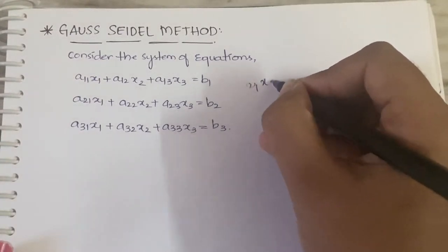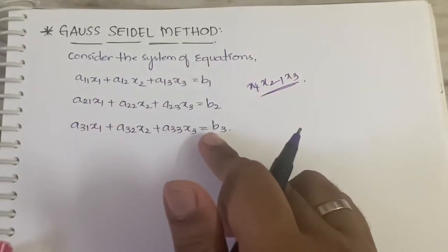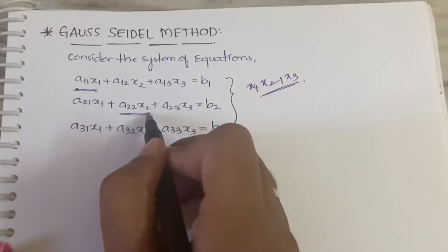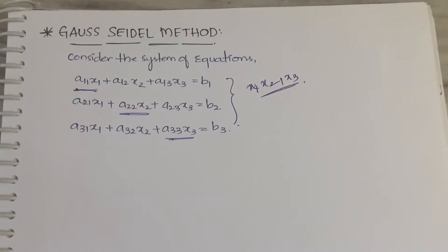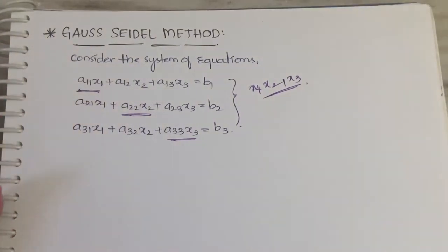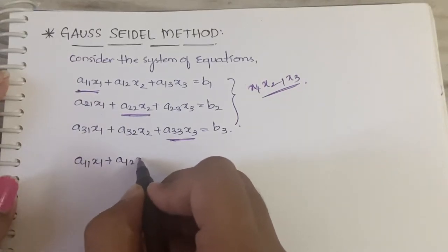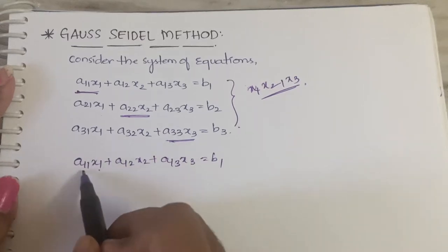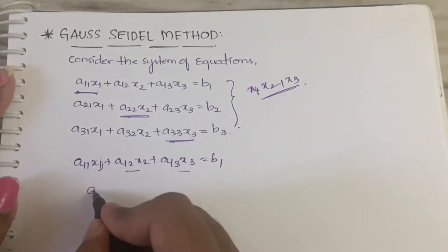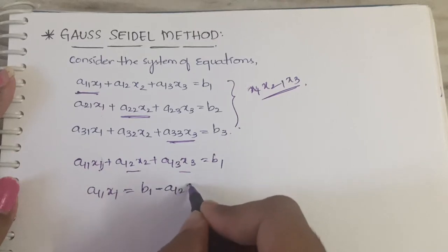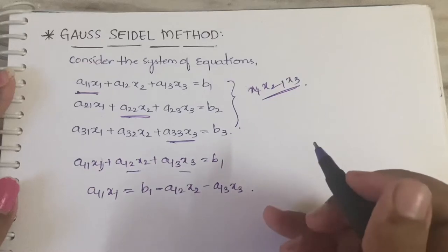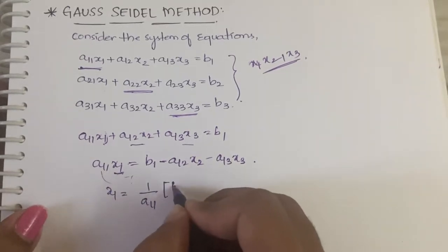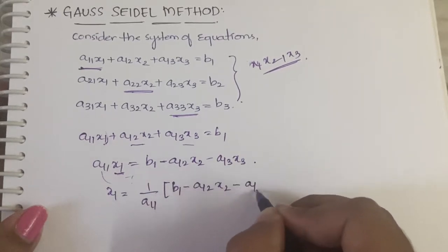We need to find out x1, x2, and x3 from this system of three equations. We have three equations and three unknown values. From these three equations, we consider x1 from the first, x2 from the second, x3 from the third — that is, we need to consider the diagonal elements only. So from the first equation, a11·x1 + a12·x2 + a13·x3 = b1, rearranging gives: a11·x1 = b1 − a12·x2 − a13·x3, so x1 = (1/a11)(b1 − a12·x2 − a13·x3).